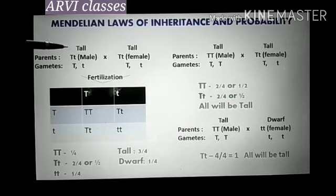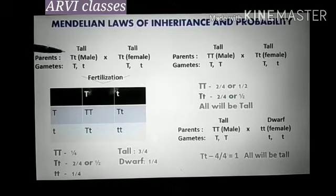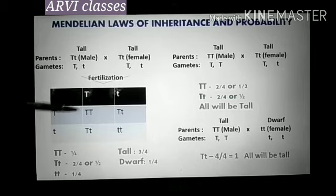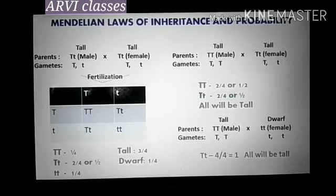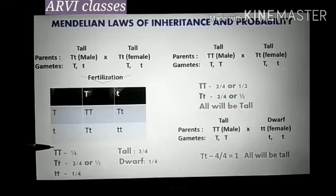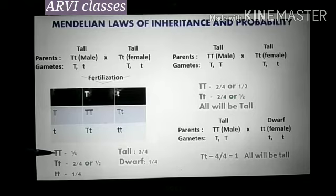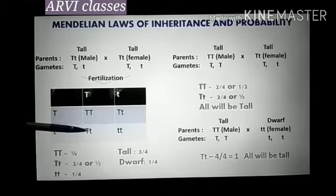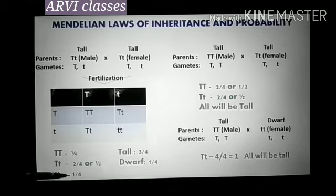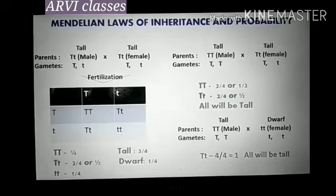If we cross two heterozygous parents for the gene T and observe the progeny, there are four possible outcomes of this fertilization event. The probability of homozygous tall can be calculated as 1 by 4. The probability of heterozygous is 2 by 4 or 1 by 2. And if we see the homozygous dwarf, the probability of getting this is 1 by 4. This is the genotypic ratio.